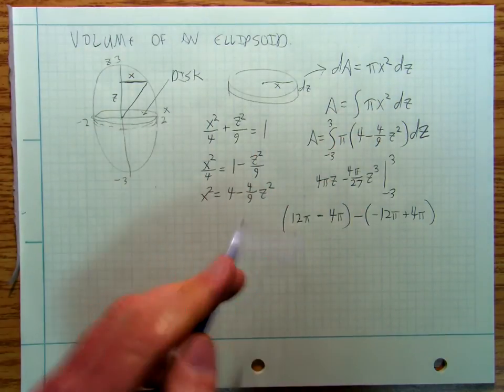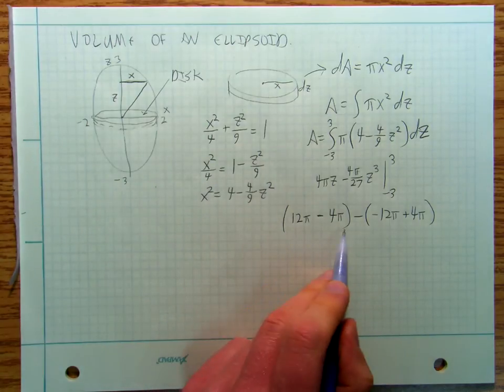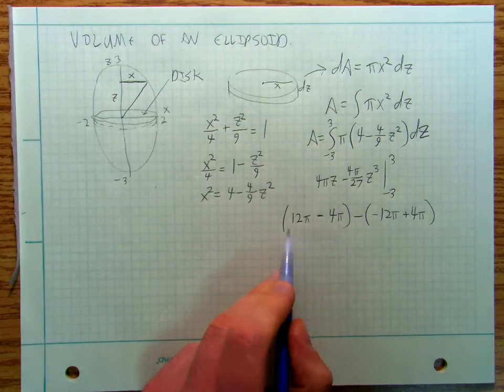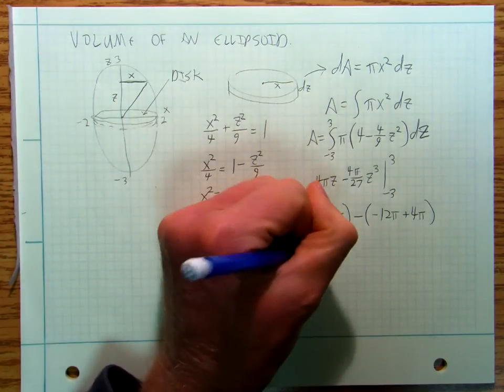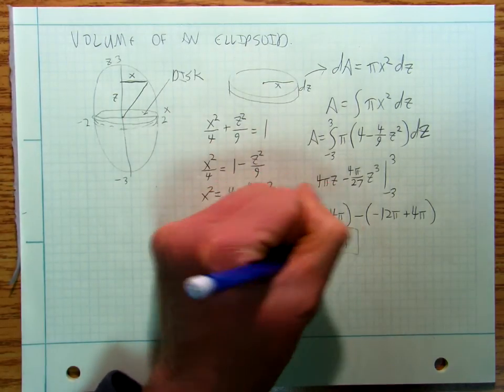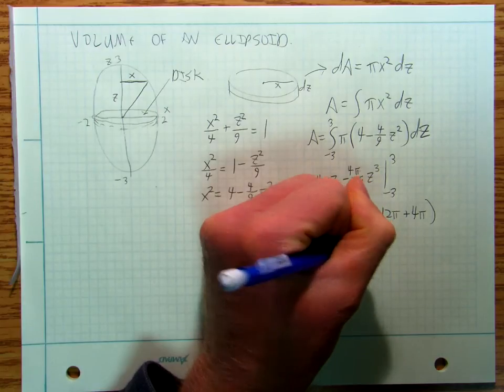And so I'm going to get 8 pi minus minus 8 pi. So I'm going to get 16 pi is going to be my volume.